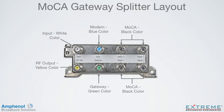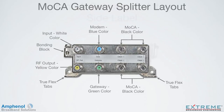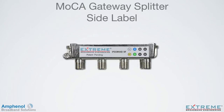On the right side are four MOCA ports, identified with black port colors. The MOCA clients or Ethernet coaxial bridges would be connected to these ports. There are two TruFlex tabs that provide flexible mounting options and a built-in bonding block to provide an electrical bond if needed. There is also a side label for easy port identification when mounted horizontally.